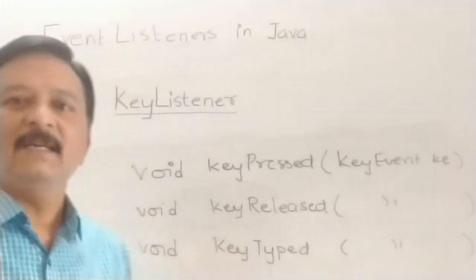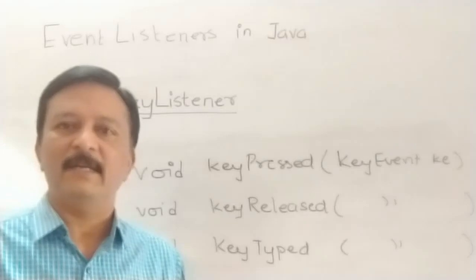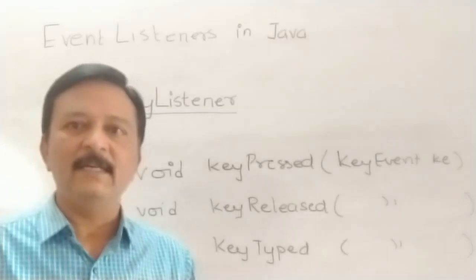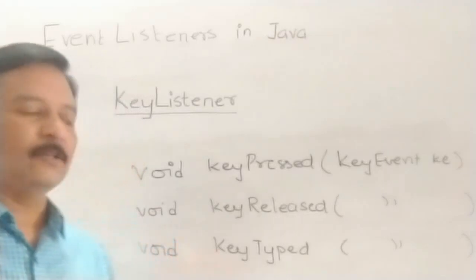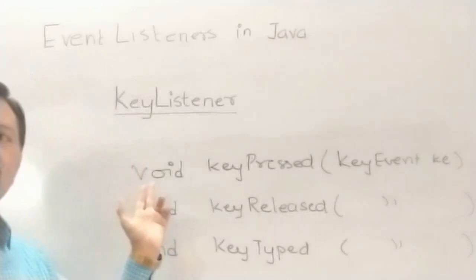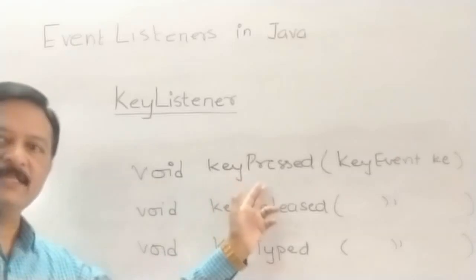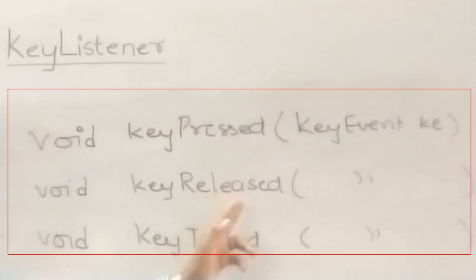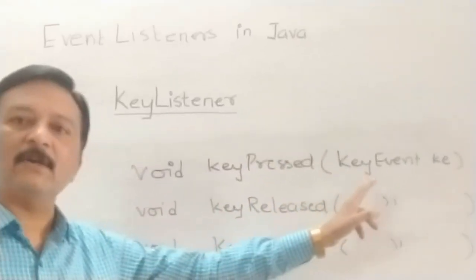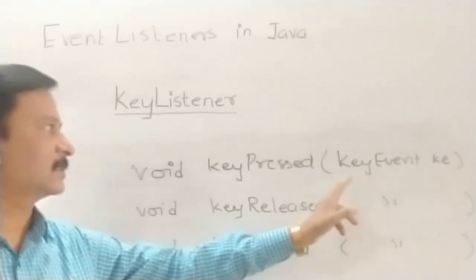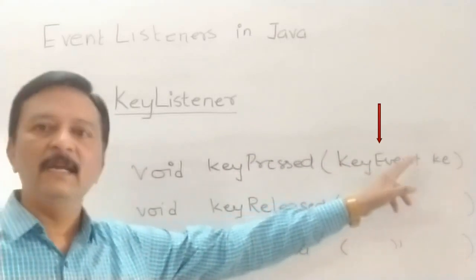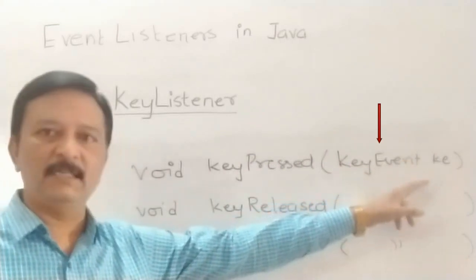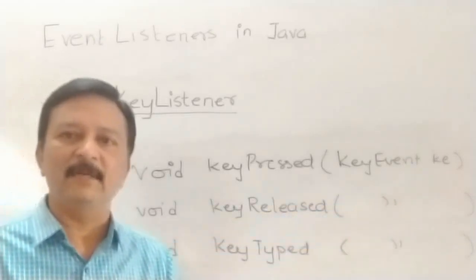The KeyListener interface consists of three important methods. The first method is void keyPressed, the second is void keyReleased, and the third is void keyTyped. The argument for all three methods is an object of the KeyEvent class. These are very interesting methods and I will explain why.